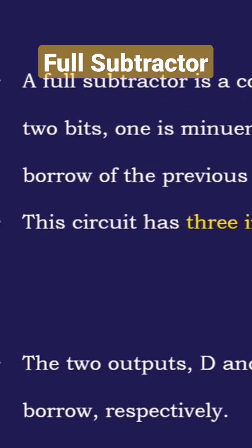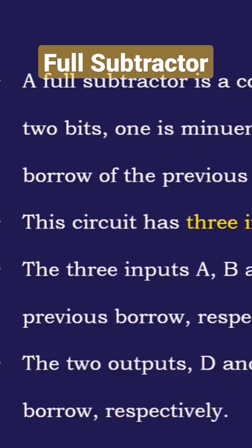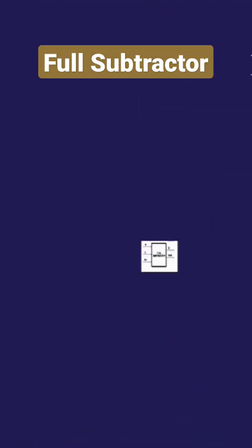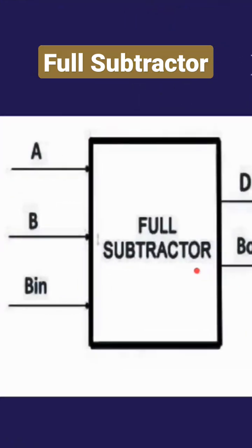Let us see how the truth table of this full subtractor is formed. Before that, we see the block diagram and the gate diagram of the full subtractor. Here, the full subtractor has three inputs and two outputs.